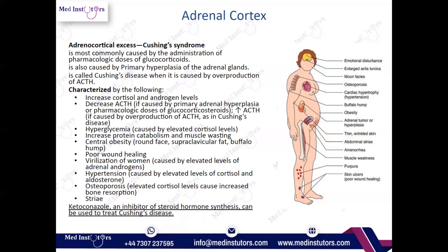Now let's talk about Cushing's syndrome. In Addison's disease there was no cortisol, but in Cushing's syndrome there is an excess of cortisol. Cortisol is the stress hormone — it increases gluconeogenesis and raises glucose levels. It also suppresses the immune system — that's why we give corticosteroids for immune disorders. And it has anti-inflammatory effects — we give corticosteroids for many inflammatory conditions. In Cushing's syndrome, all these normal functions are exaggerated.